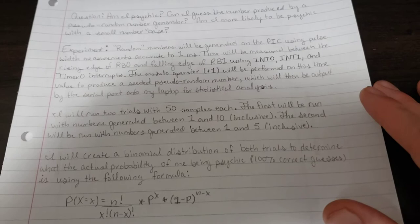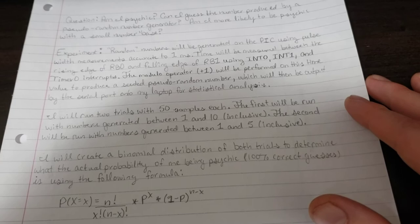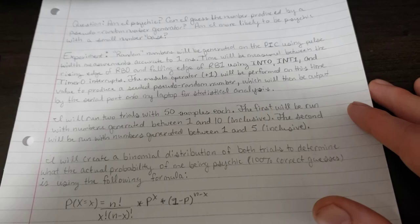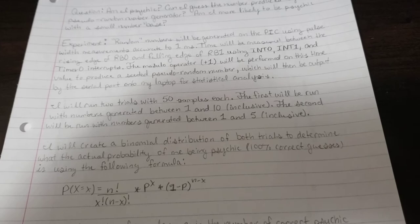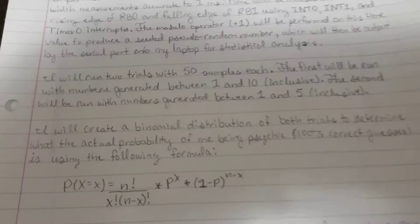For the experiment, random numbers will be generated on the PIC using pulse width measurements accurate to one millisecond. Time will be measured between the rising edge of RB0 and falling edge of RB1 using INT0, INT1, and timer 0 interrupts. The modulo operator plus 1 will be performed on this time value to produce a seeded pseudo random number which will then be output by the serial port onto my laptop for statistical analysis.